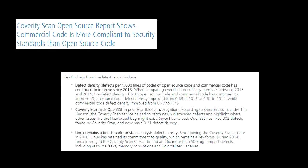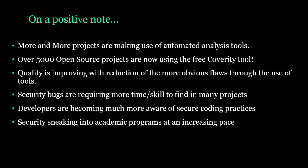A report from Coverity showed that open source code tends to be less compliant but that is improving. The Linux kernel and over 5,000 other projects are now using their service. It won't find architectural flaws, but it's a good place to start. More and more people are using automated tools, quality is improving with reduction of obvious flaws, and it's requiring more time and skill to find vulnerabilities. Academic programs are starting to include security classes — often as electives, but they're moving in that direction.